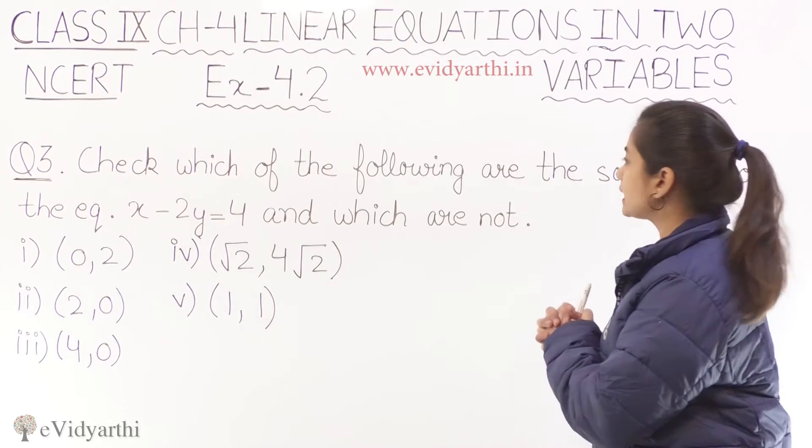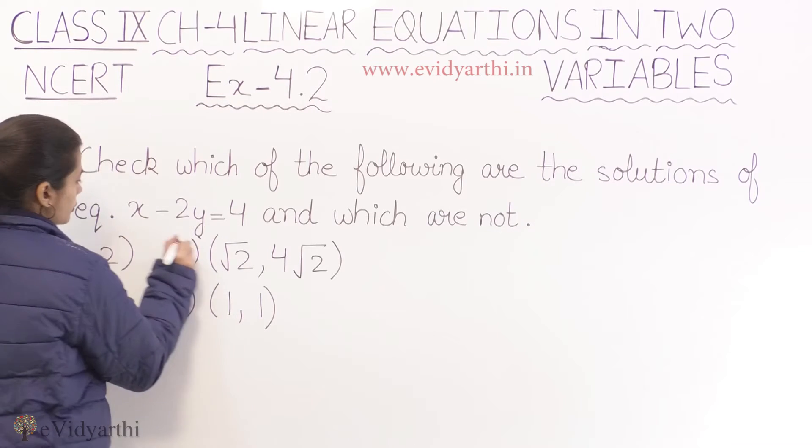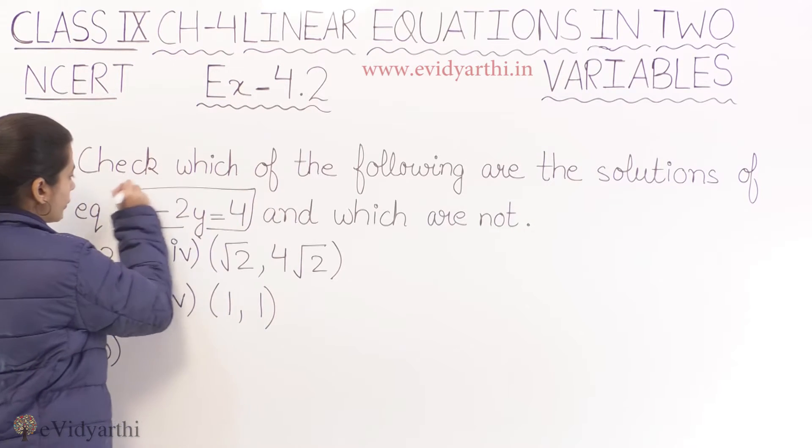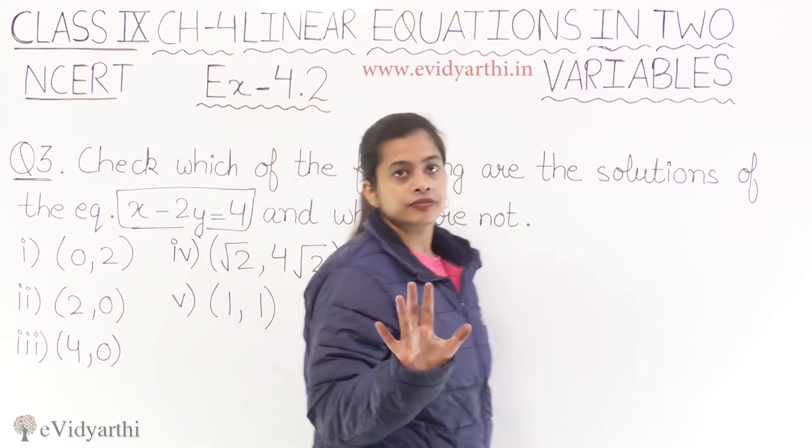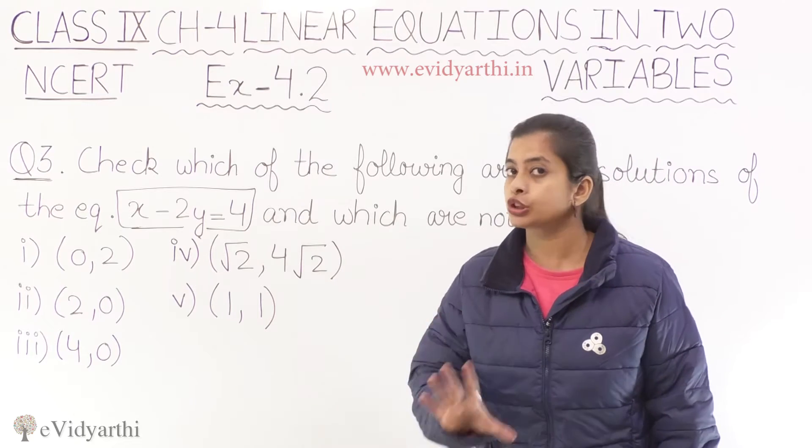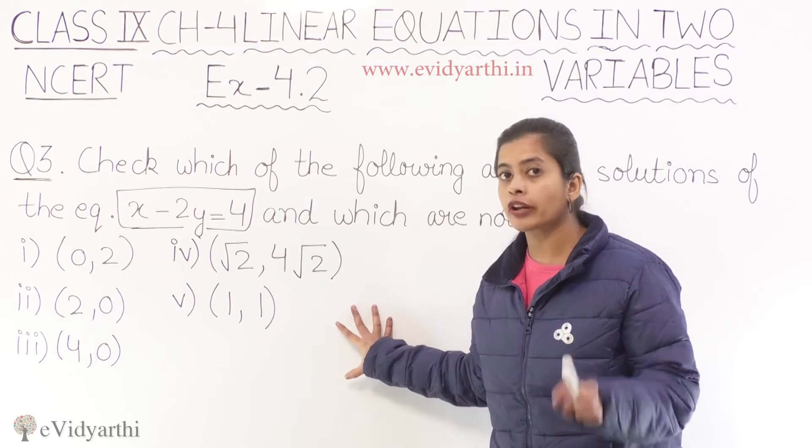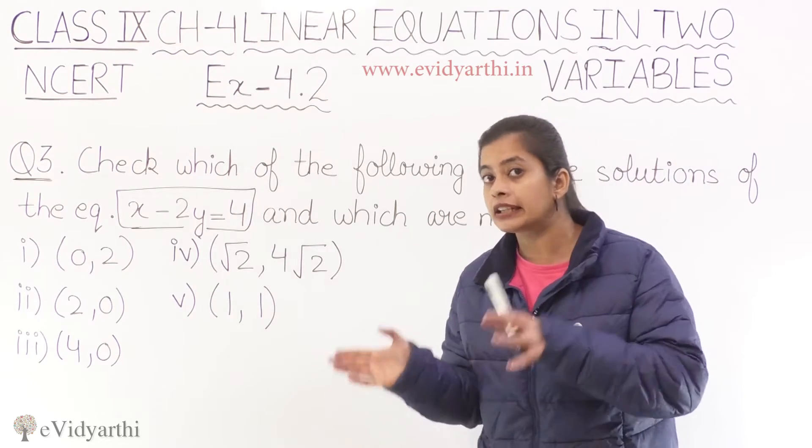Check which of the following are the solutions of the equation x minus 2y equals to 4. Ye hamaara equation hai and which are not. So yahaan per mere paas 5 solutions given hai. I don't know whether they are the solutions or not. Abhi humme ye surety nahi hai.